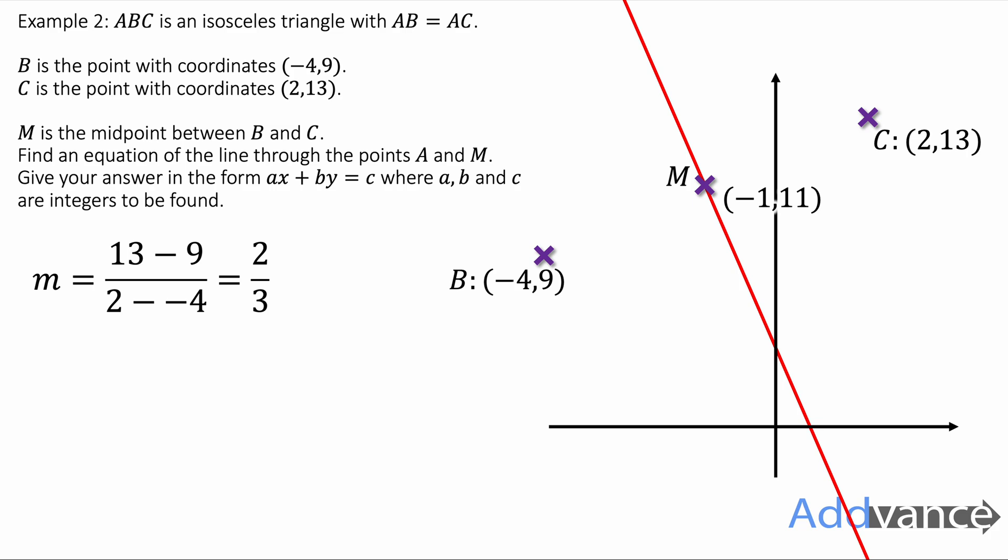We're going to make this line go through the point (-1, 11) because it goes through the midpoint. So y = 2/3 x + c. Substitute the numbers in like this and we solve for c. We get 35/3. The y-intercept is 35/3.